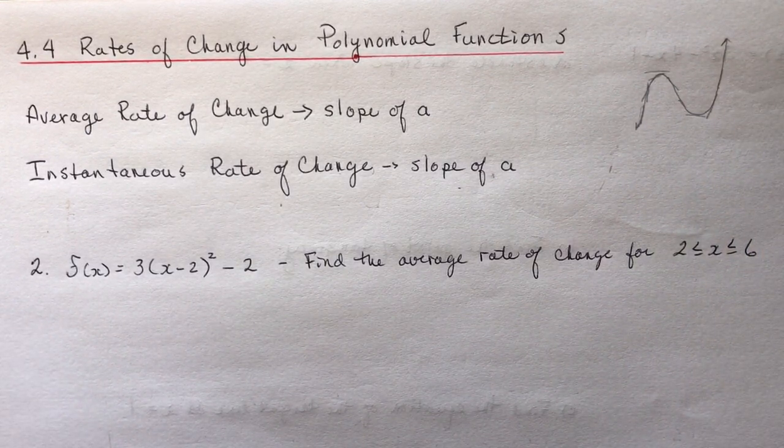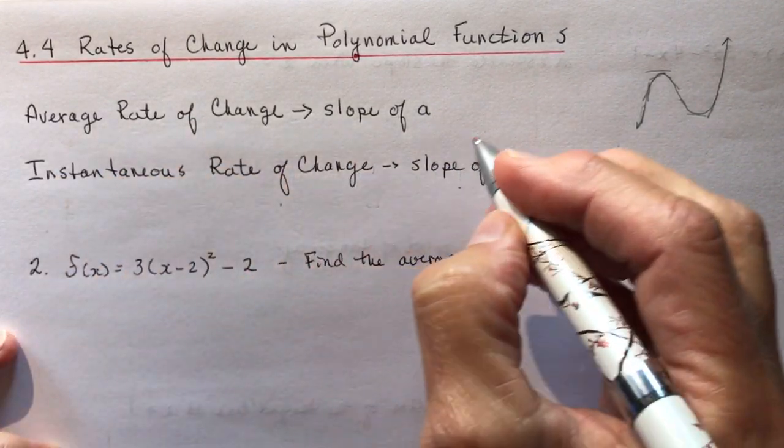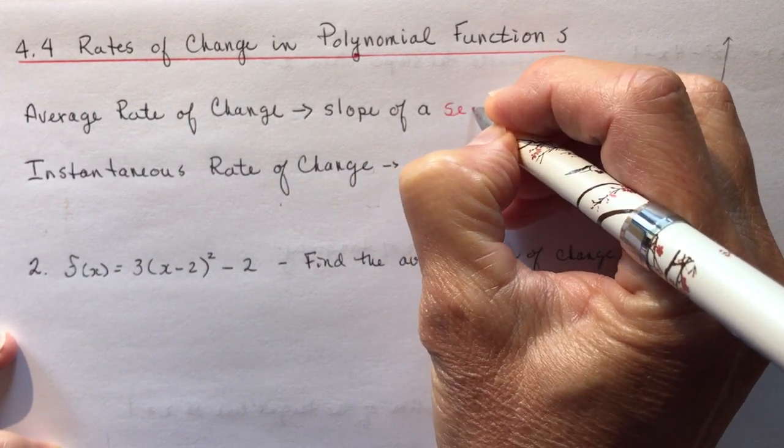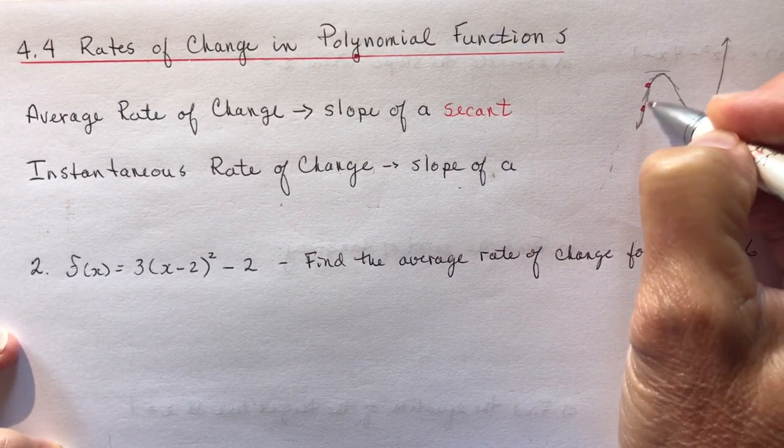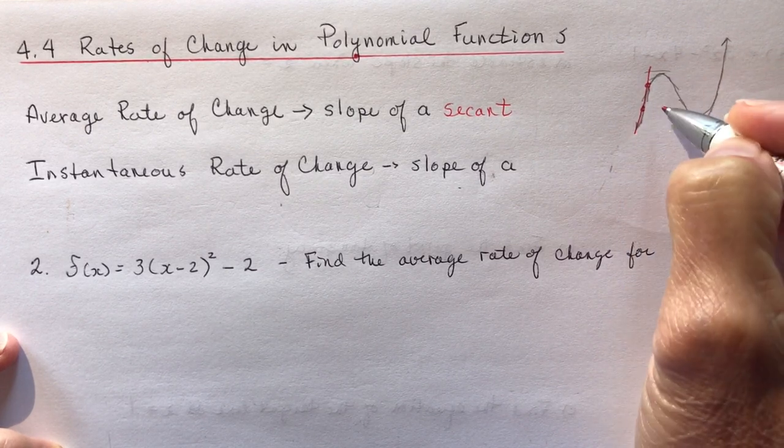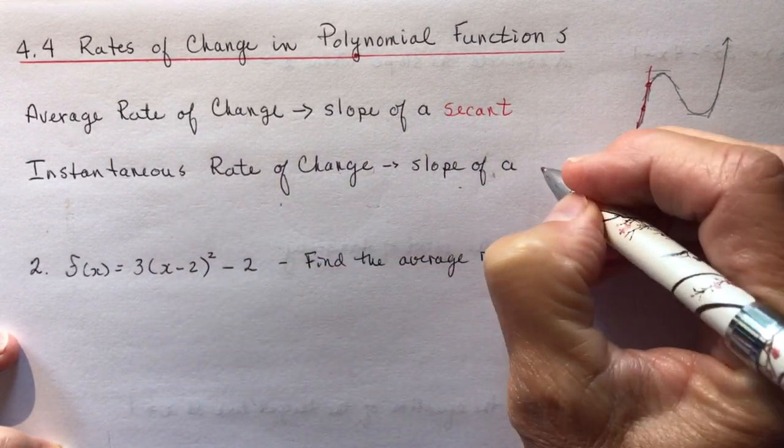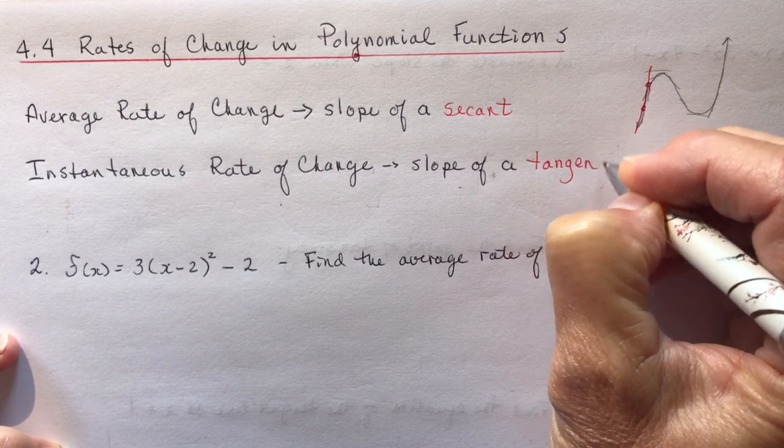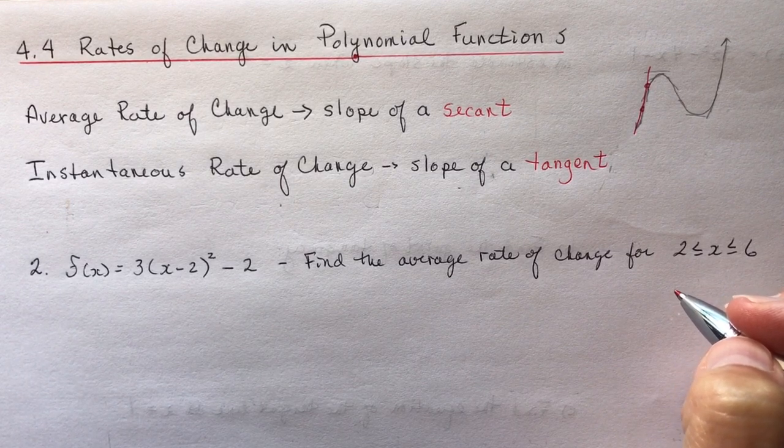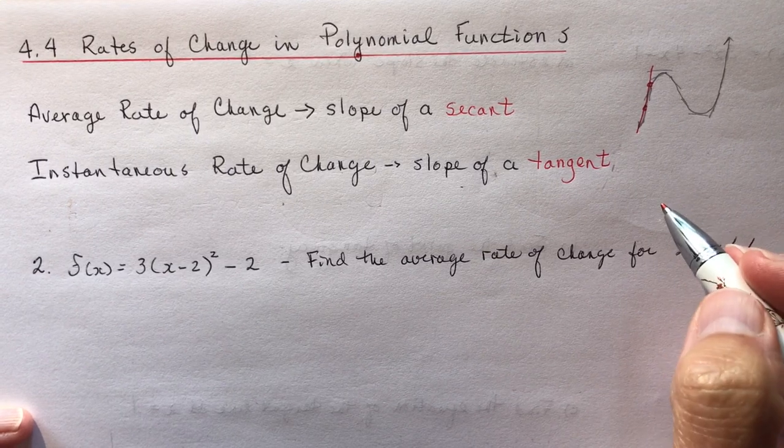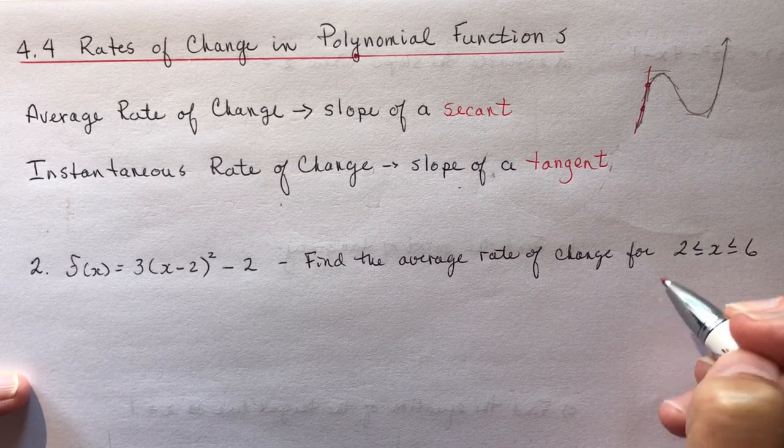So we talked about two things previously in Chapter 2 on rates of change. And that is the average rate of change being the slope of a secant. Remember, a secant line is just any line that joins two points on your graph. So if I took these two points and I drew a line, that would be a secant line. The instantaneous rate of change is the slope of a tangent. Now these are concepts that are critical for your understanding of calculus. So all these little lessons at the end of every chapter when they do rates of change, there will be a rate of change section at the end of each chapter as you go through this textbook. And that is because they're warming you up for calculus.